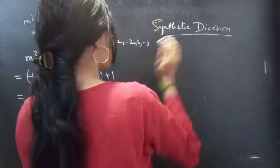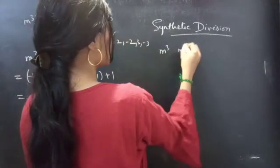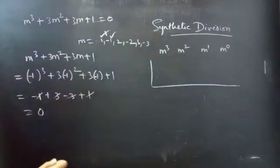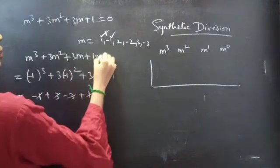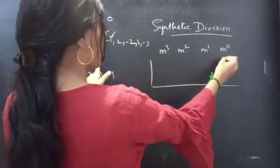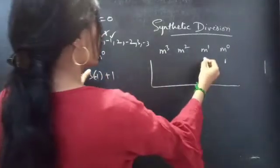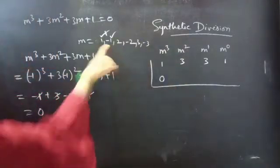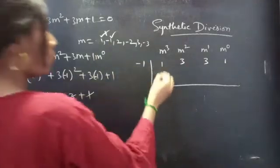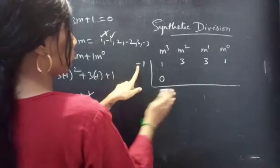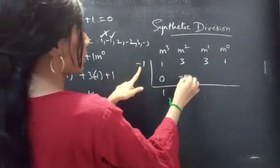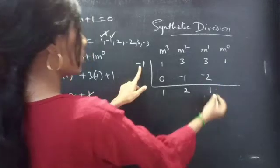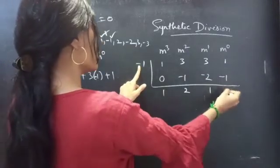Now applying synthetic division with m = -1. Writing the coefficients: 1, 3, 3, 1. Bring down 1; -1×1 = -1; 3 - 1 = 2; -1×2 = -2; 3 - 2 = 1; -1×1 = -1; 1 - 1 = 0. So we get the quotient polynomial m² + 2m + 1.